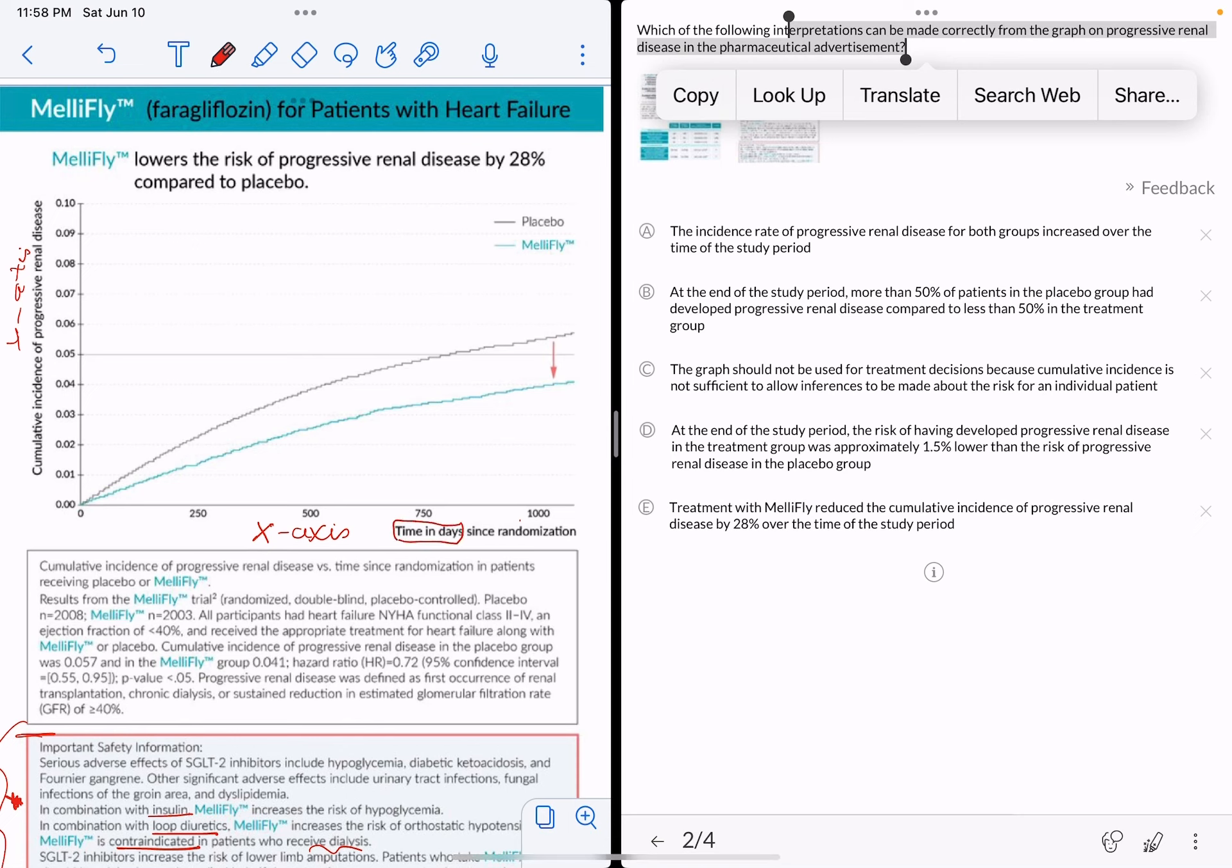So this study was done over 1,000 days, which is more than three years. Number two, the y-axis mentions the incidence of progressive renal disease.